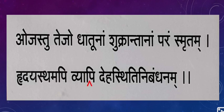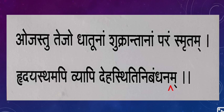Iska pure body mein circulate hota hai - par Ojas heart mein rehta hai jo main rehta hai, aur apara pure body mein circulate hota hai. Kya karta hai yeh? 'Dehasthiti ni bandhanam' - pure body ko ek synchronized manner mein control karke rakhta hai, ek stable, well-maintained condition mein rakhta hai. Yahi Ojas ka function hai.